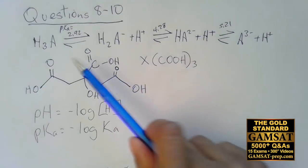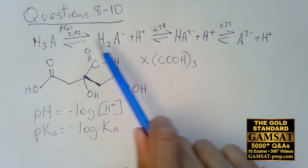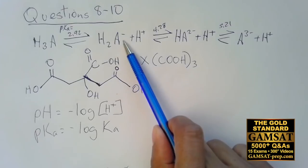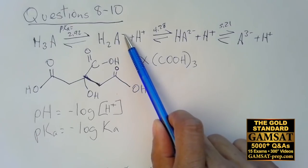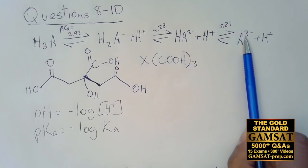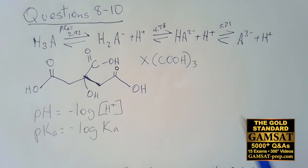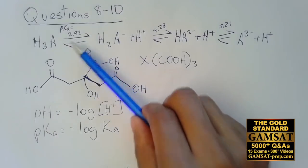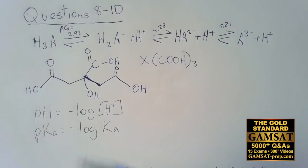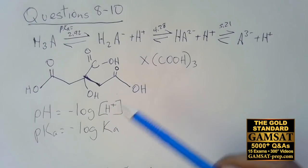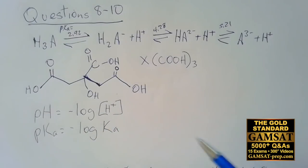One ionic form is negative two and another will be negative three — something to keep an eye on. These are the pKa values, so it's very important that you understand what a Ka is. Ka is the acid dissociation equilibrium constant.